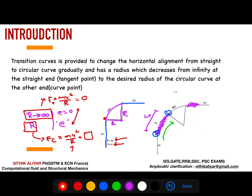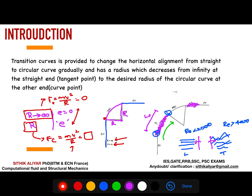There is another term from fluid mechanics — for layered flow in a pipe, the Reynolds number less than 2000 is called laminar flow, and Reynolds number greater than 4000 is turbulent flow. There is a transition zone in between that is neither laminar nor turbulent. Similarly in highway engineering, the transition curve is a small transition between the straight road and the horizontal curve.